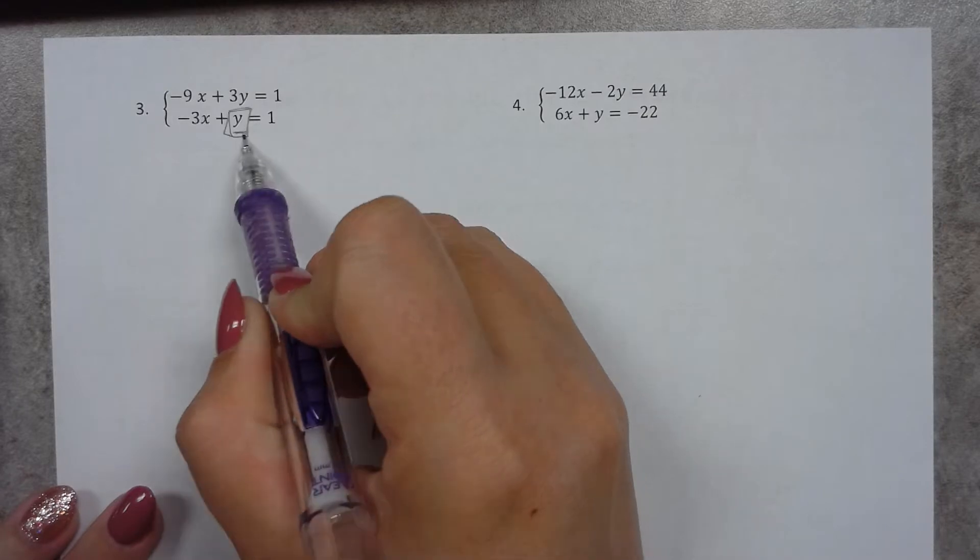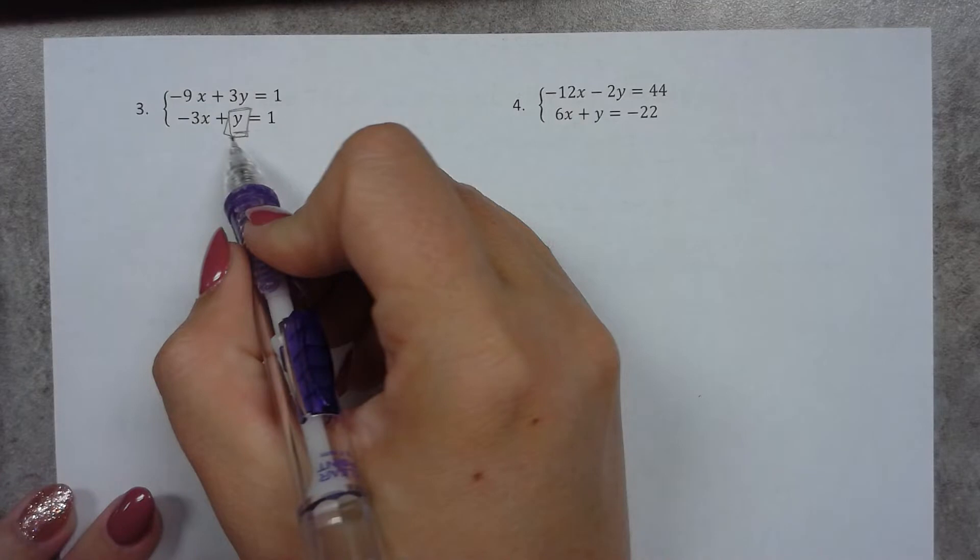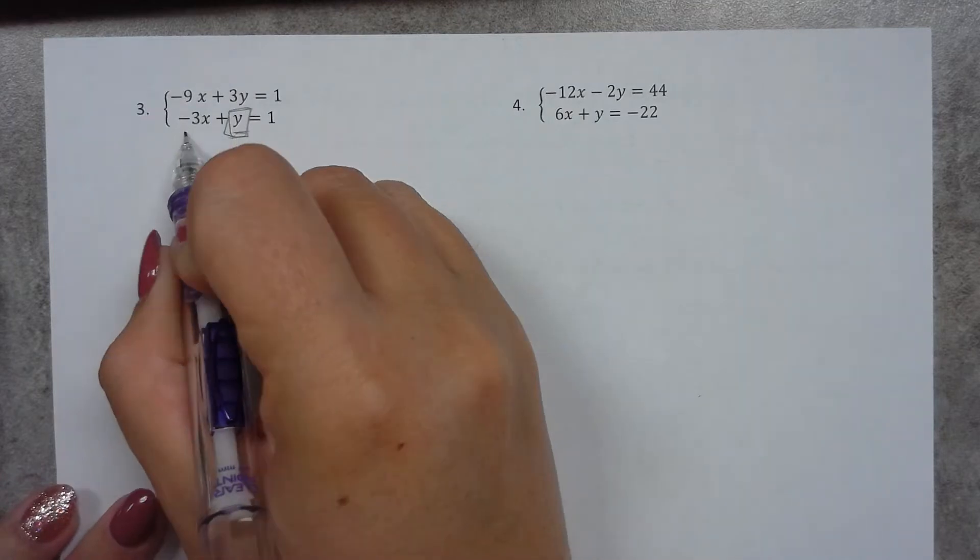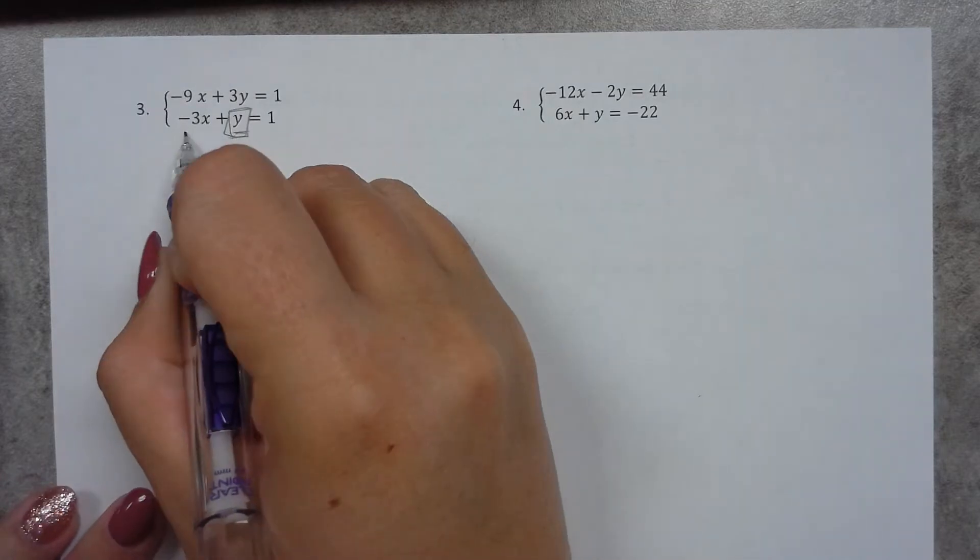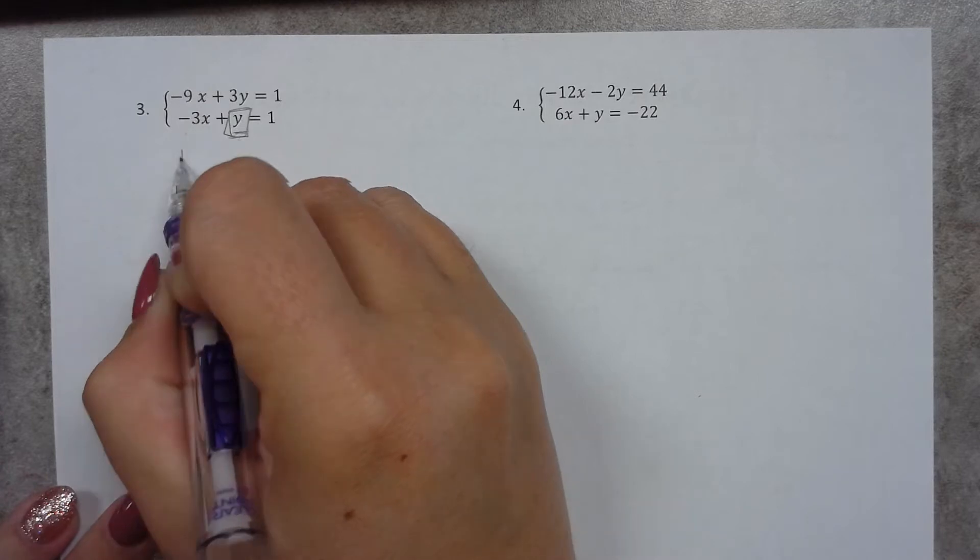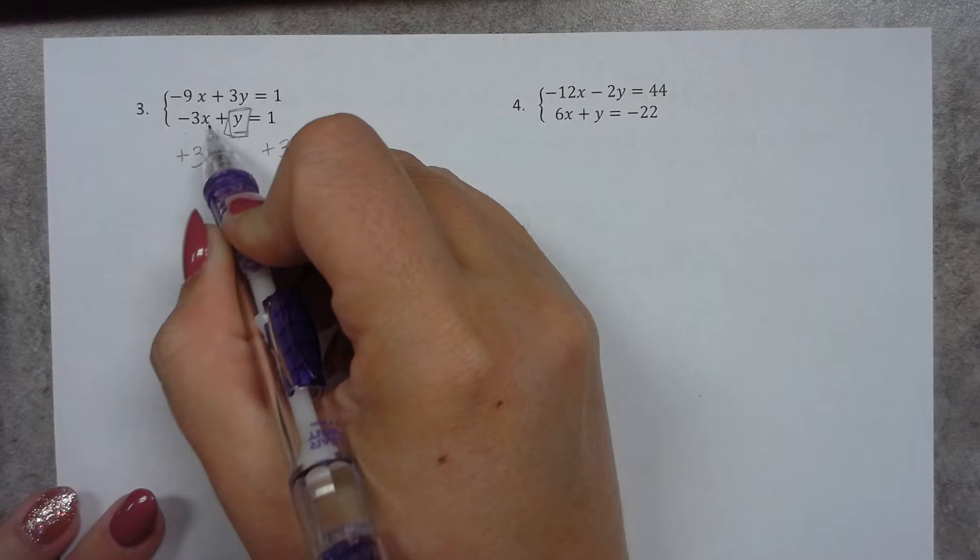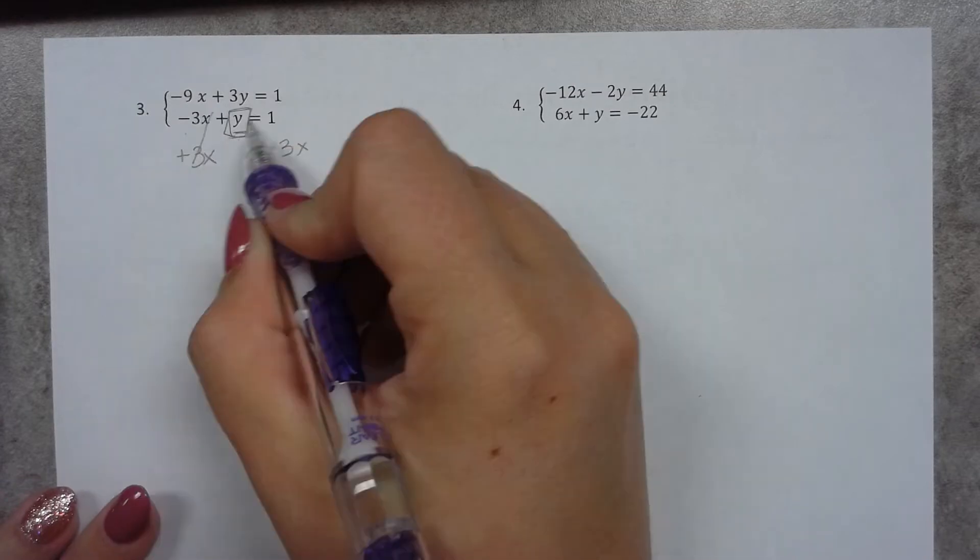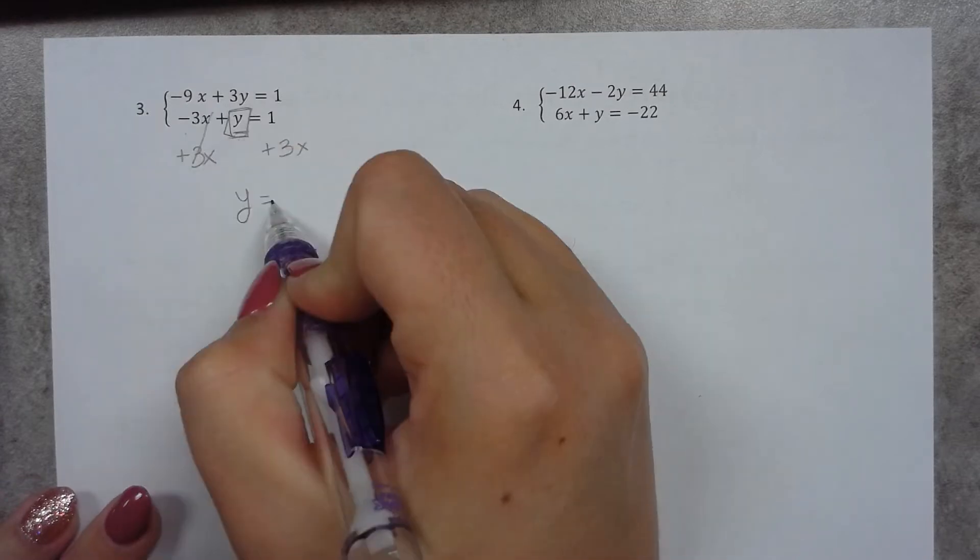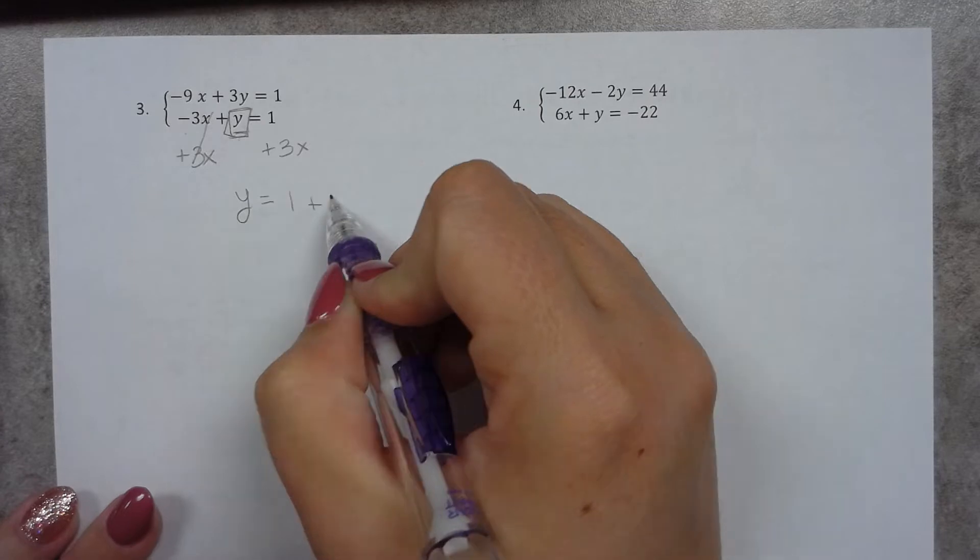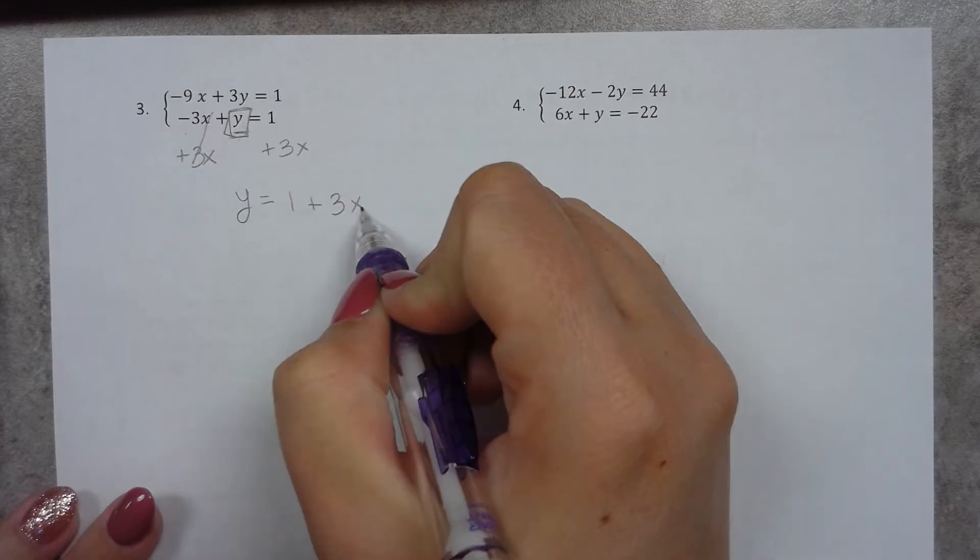Now, if I want to get this y by itself, I need to move this negative 3x. And in order to move the negative, I need to do the opposite, which is addition. So I need to add 3x to each side. So that gives me the equation y equals 1 plus 3x. Remember, you can't combine these because this is an x and this is a 1, so we're not allowed to combine them.